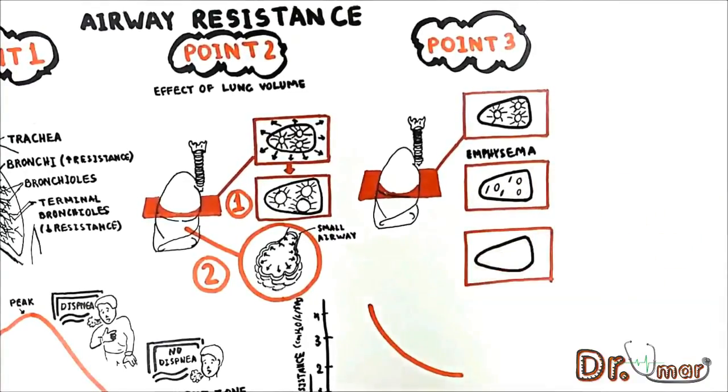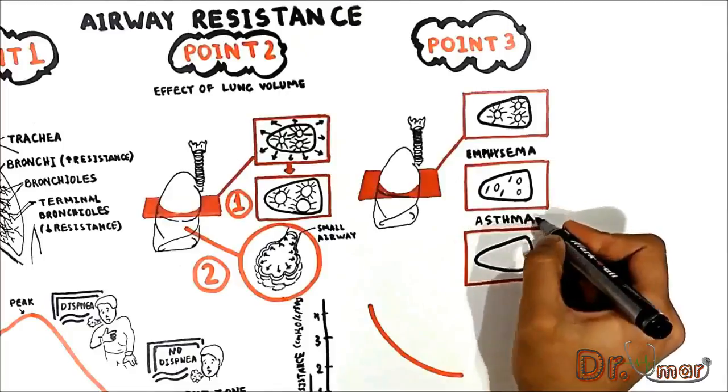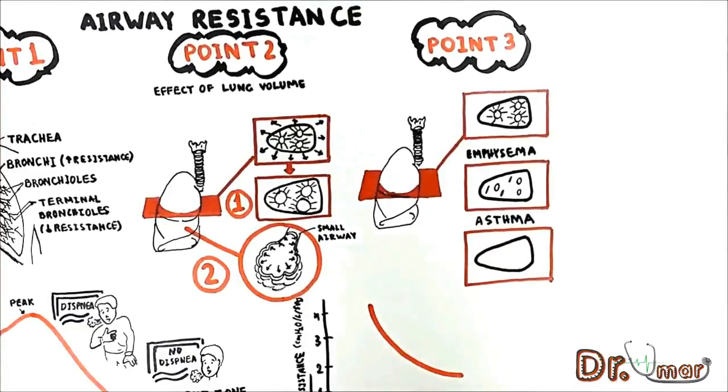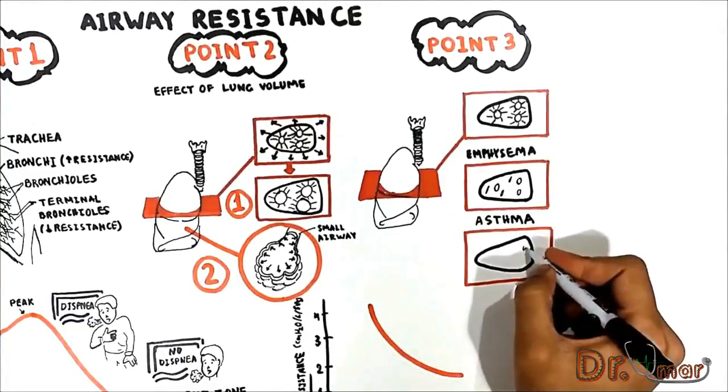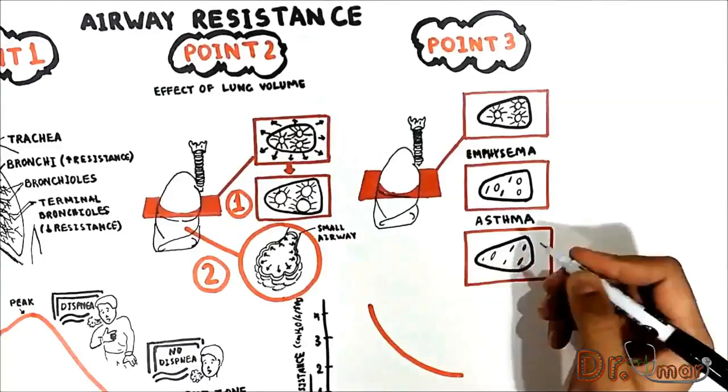Moreover, in a case of asthma, the smooth muscle tends to be constricted which also tends to collapse the airways during expiration.